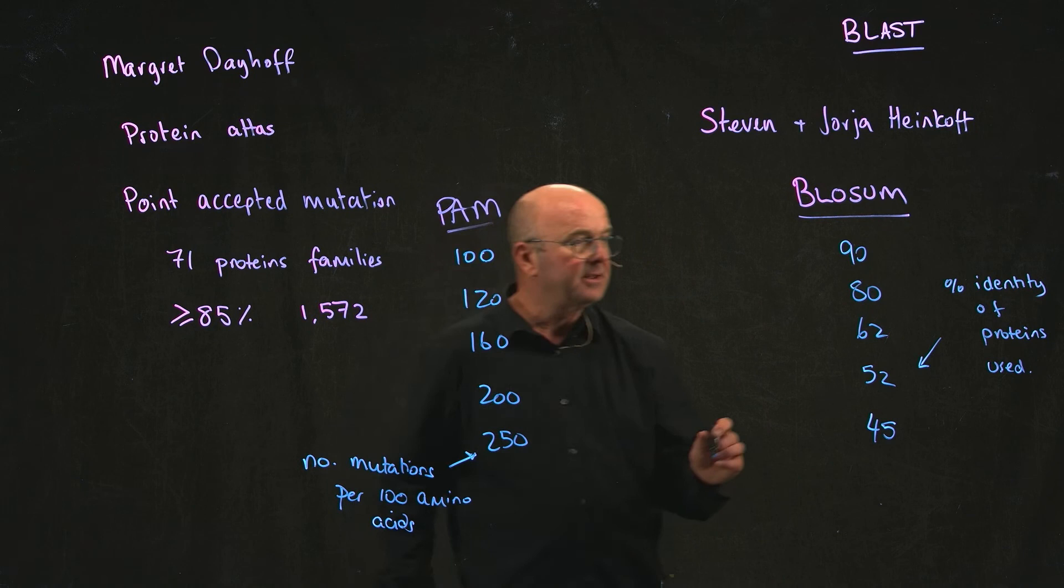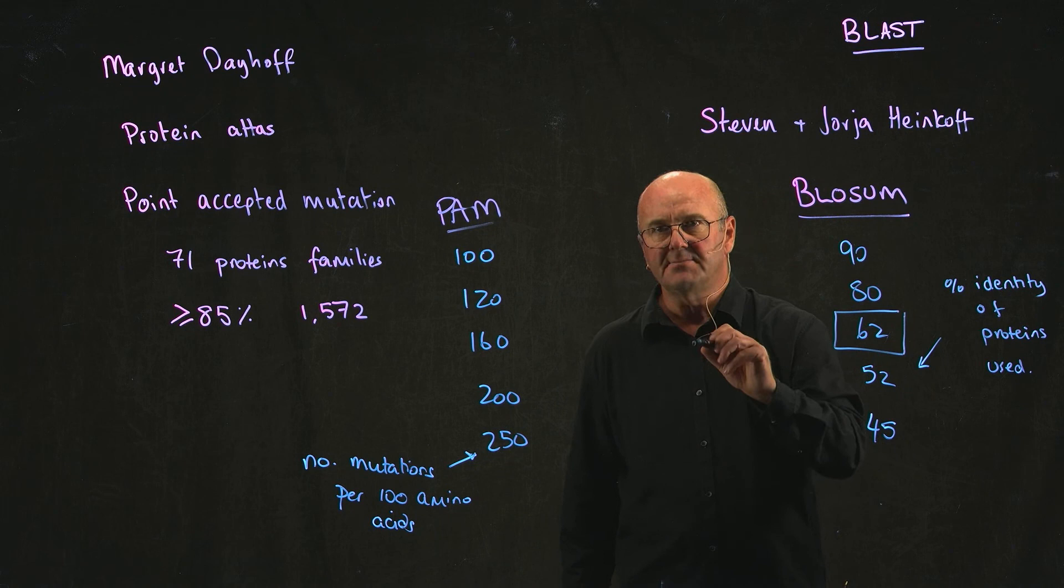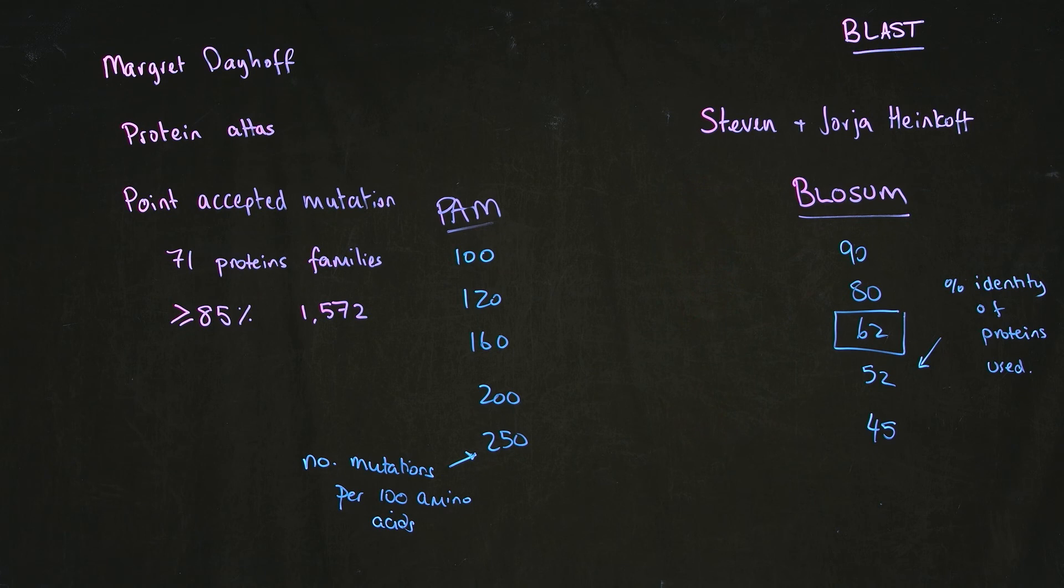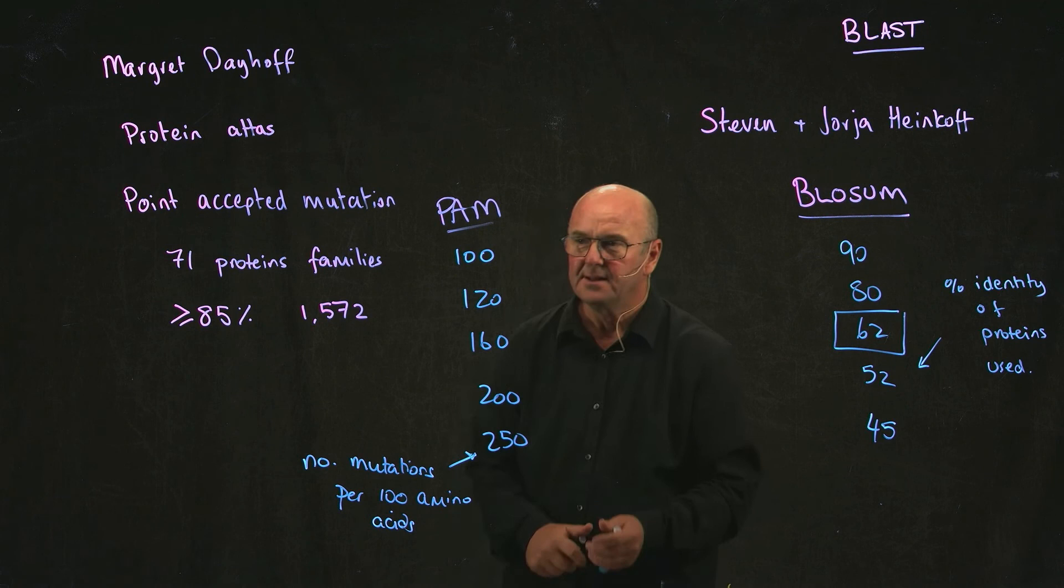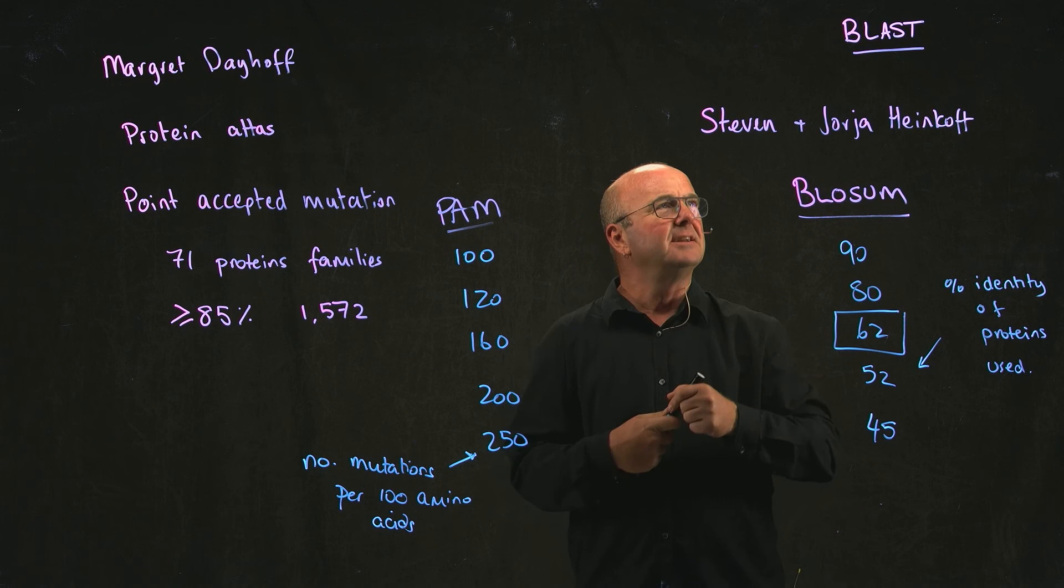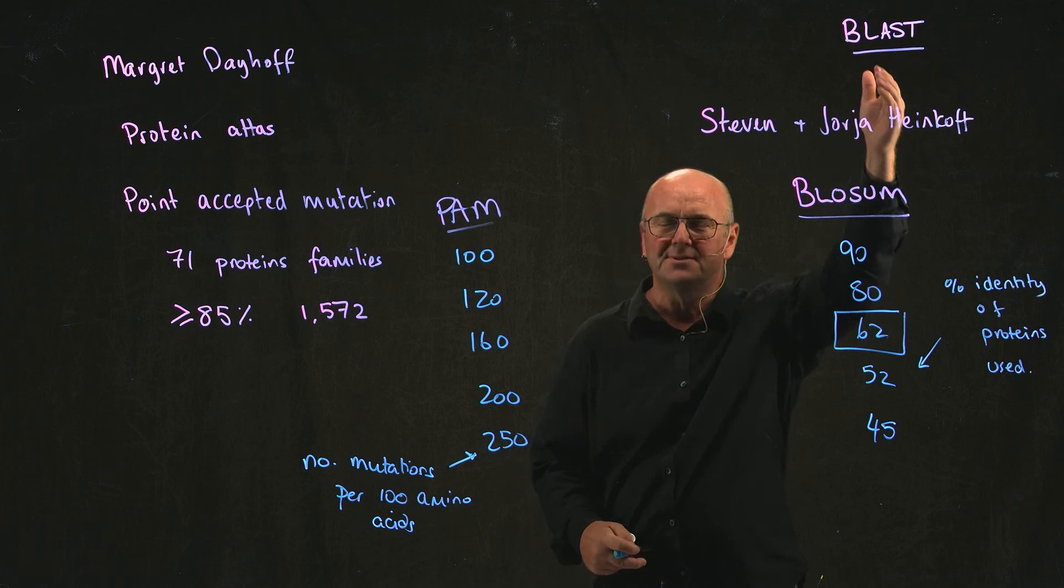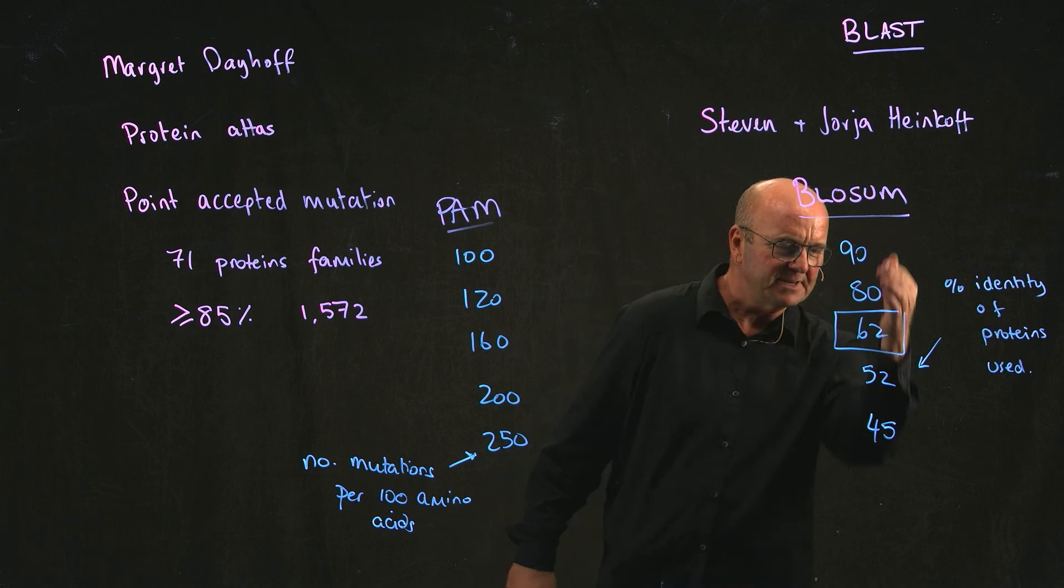Most everybody in the history of the world uses Blossom 62, simply because... Anybody know why? Why do you think everybody uses the Blossom 62 matrix? The reason that everybody uses the Blossom 62 matrix is really simple. It's the default matrix in Blast. So if you don't specify any parameters, you can say, I don't want to use Blossom 62. I want to use Pam 250, or Pam 100, or Blossom 90, or Blossom 45.